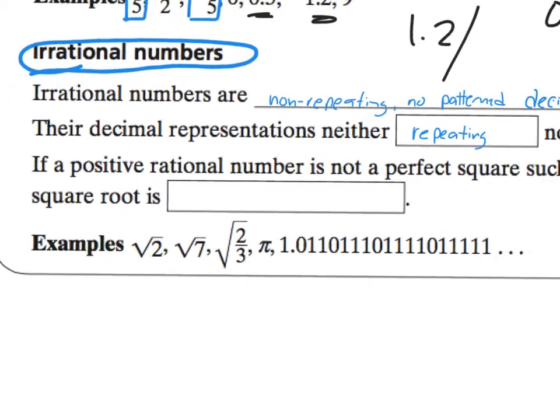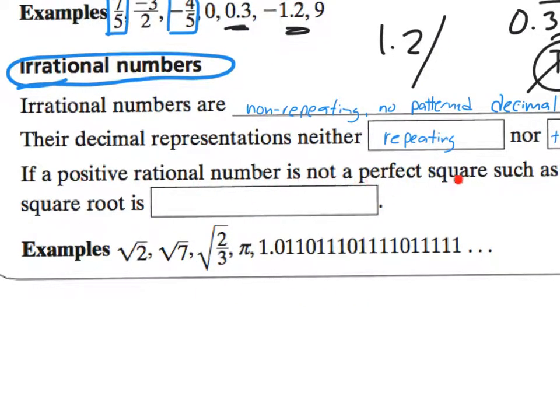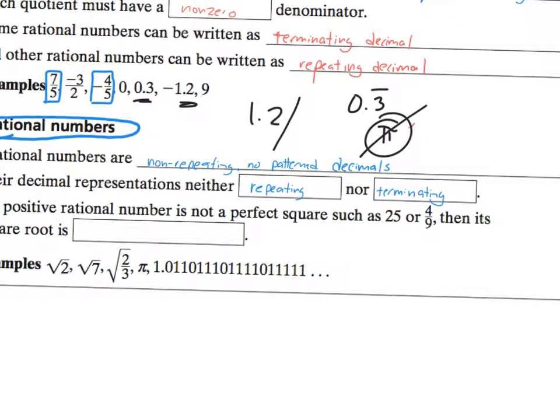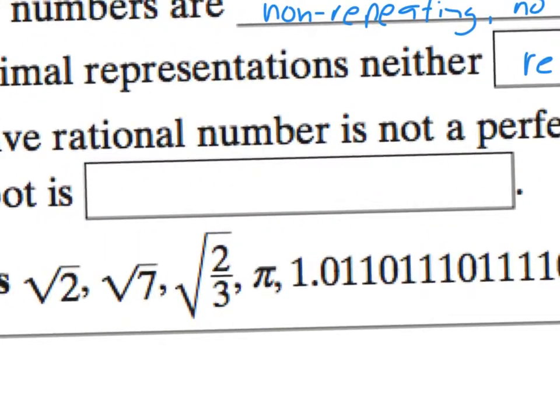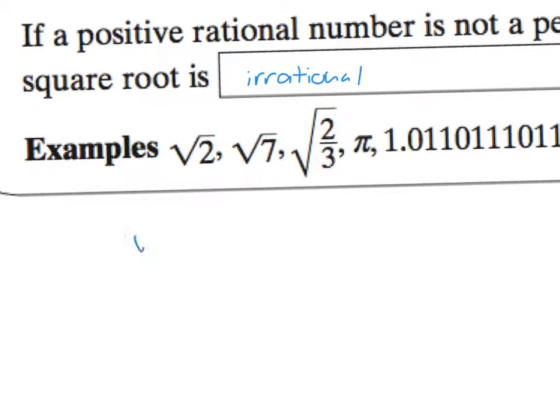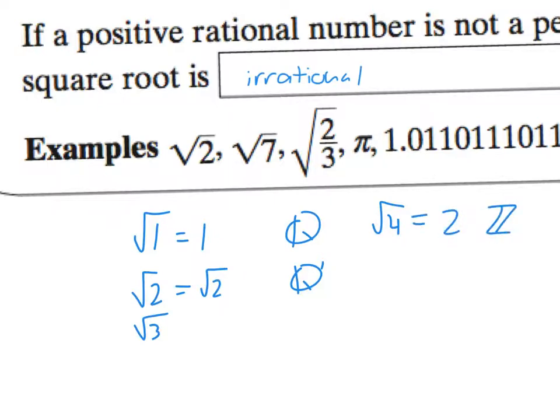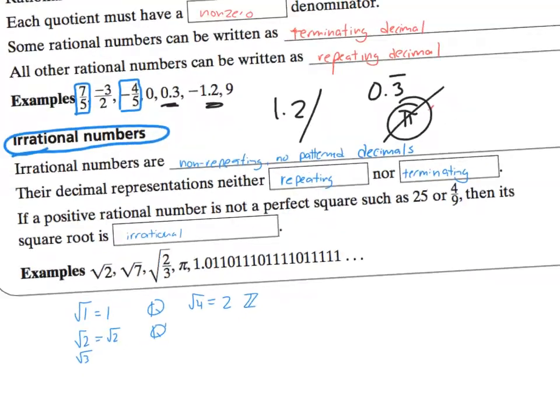So, for example, if a positive rational number is not a perfect square, such as 25 or 4 ninths, then its square root is irrational. So as we look at just a quick pattern, we can see things like the square root of 1 is 1. So that's rational. And more specific, it's part of the whole numbers. Then, radical 2 is going to be the square root of 2, and it is part of the irrational numbers. Radical 3 as well. However, radical 4 brings us back to 2, which is going to be an integer.